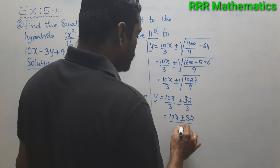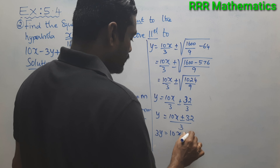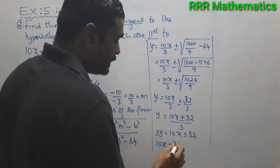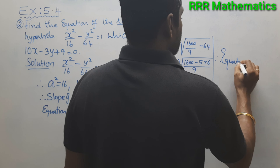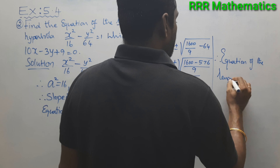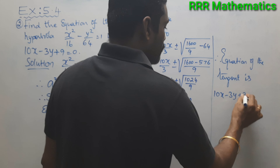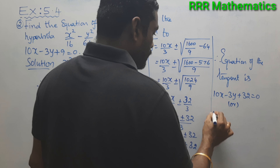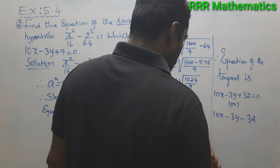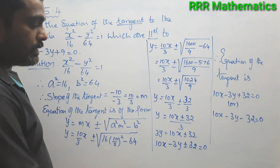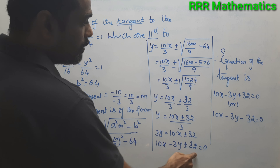So y = (10x ± 32)/3. Cross-multiplying, 3y = 10x ± 32, which gives 10x − 3y ± 32 = 0. Therefore the equation of the tangent is 10x − 3y + 32 = 0 or 10x − 3y − 32 = 0.